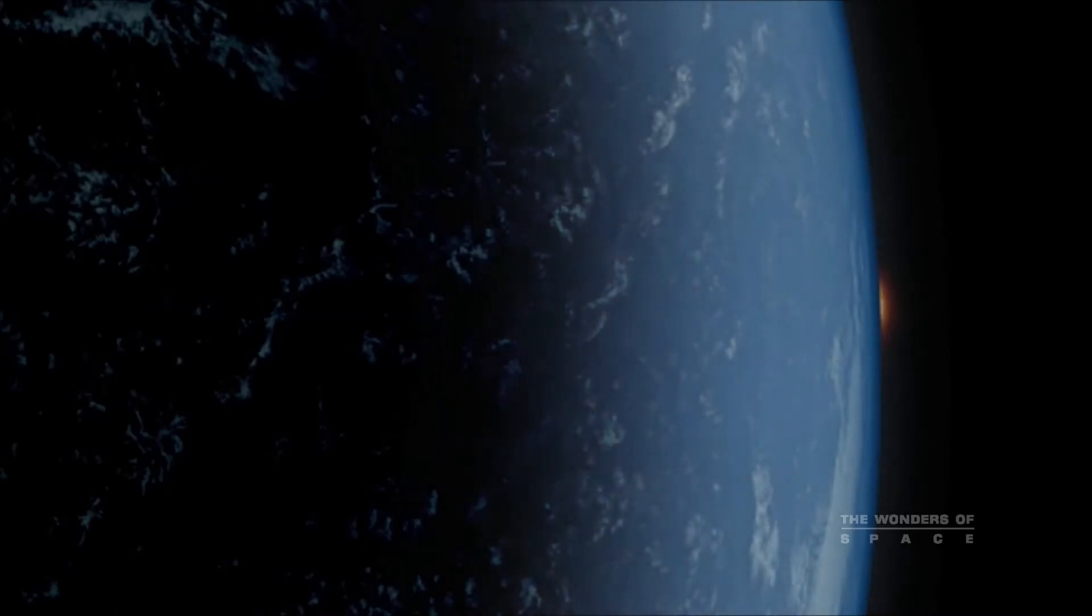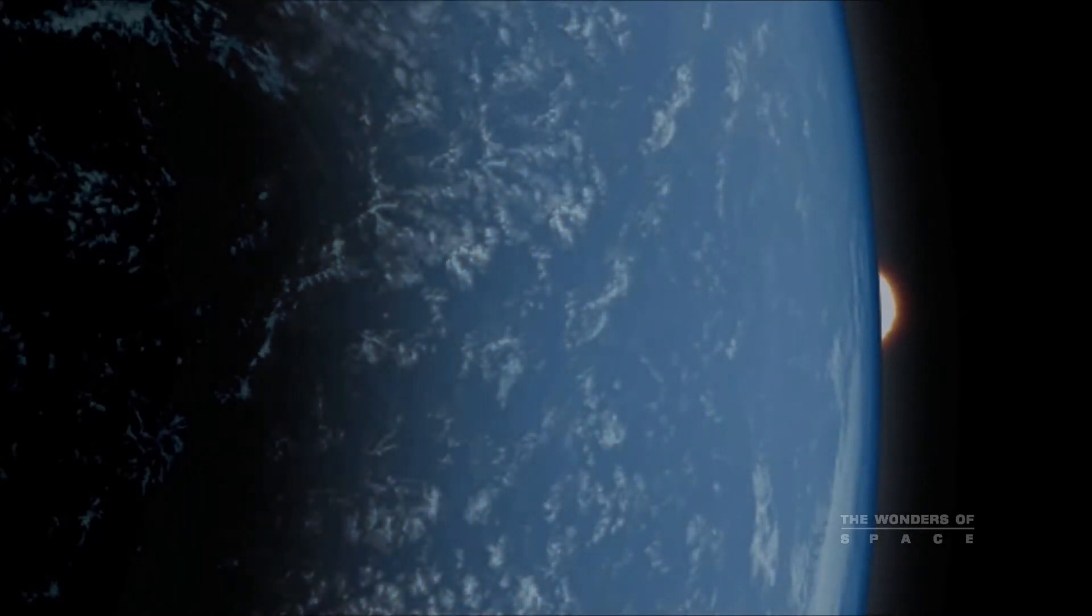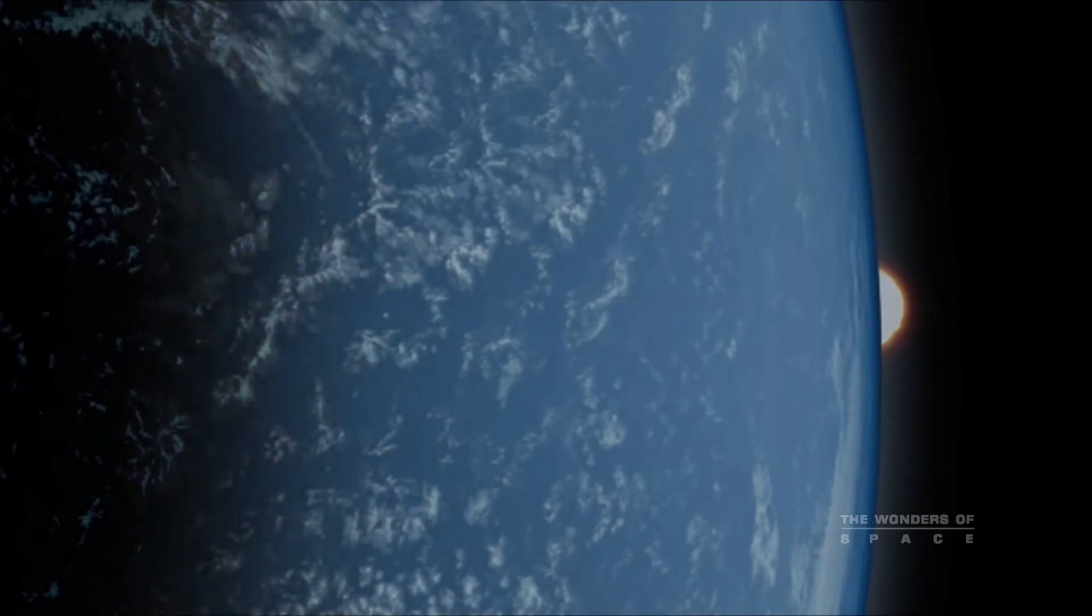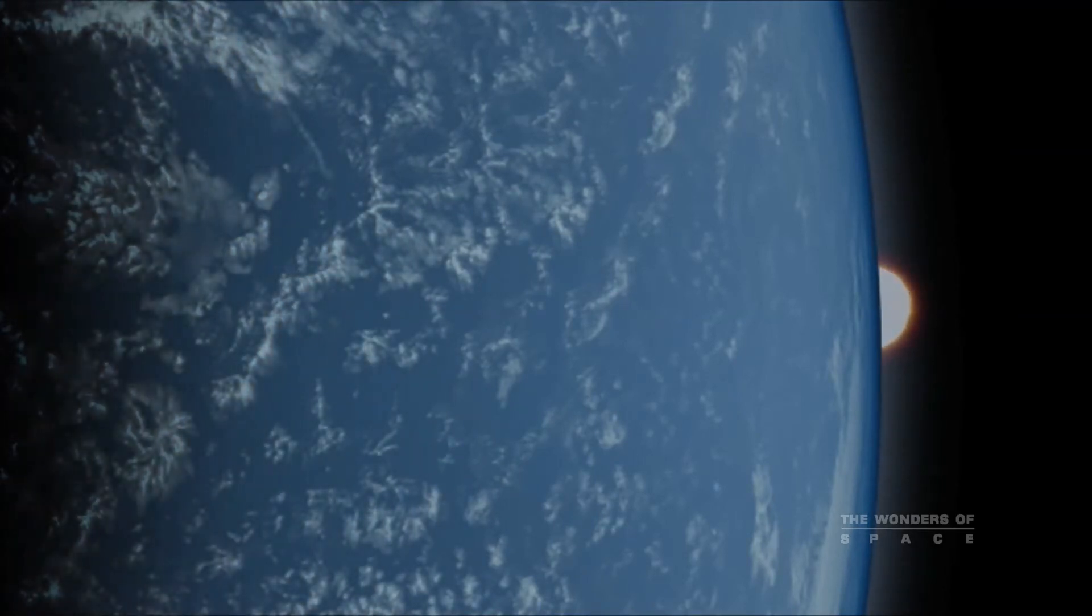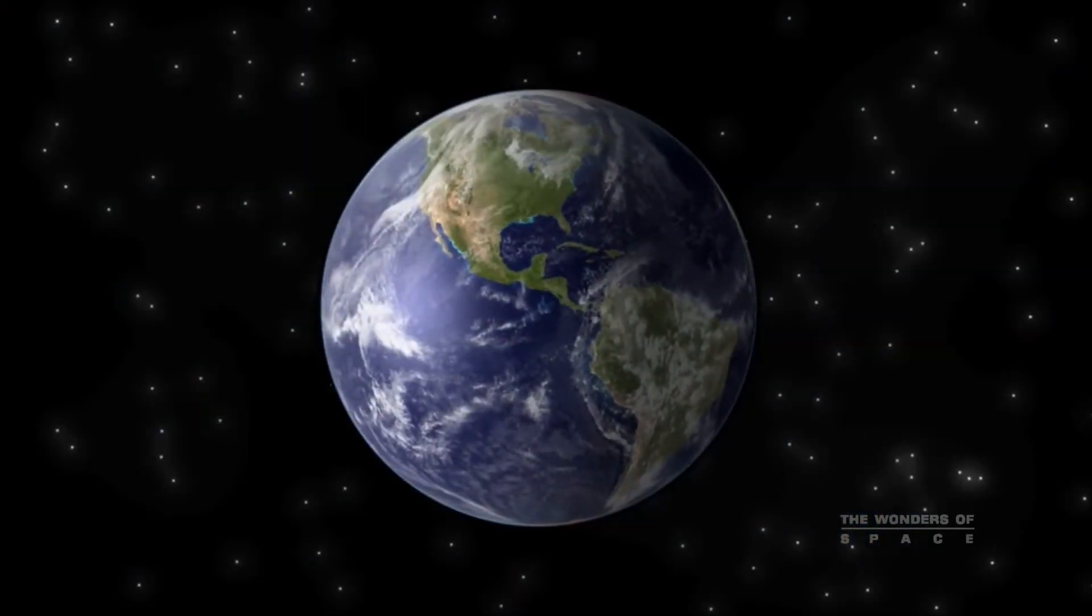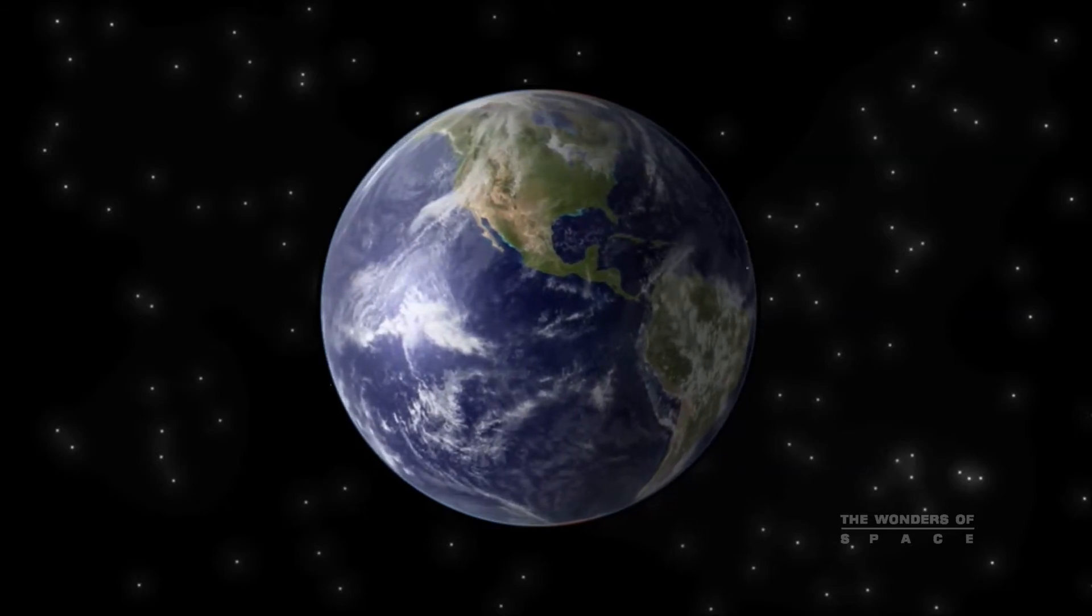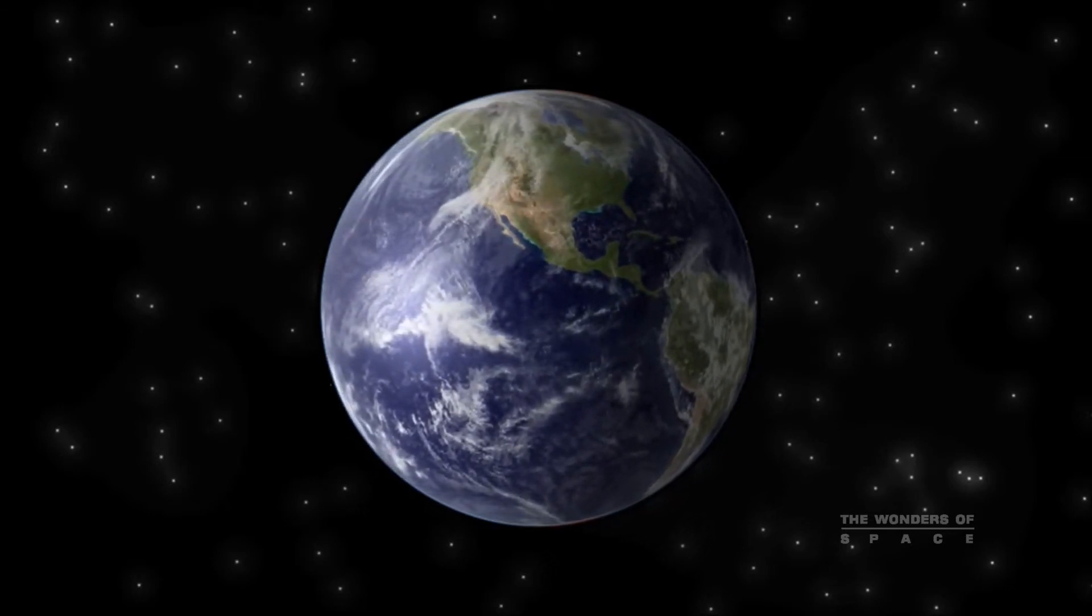Our Earth is 8,000 miles in diameter, and rotates on its axis, causing sunrise every day. It is the largest of all the planets that have a solid surface, and it possesses an unusually large moon for a planet of its size.